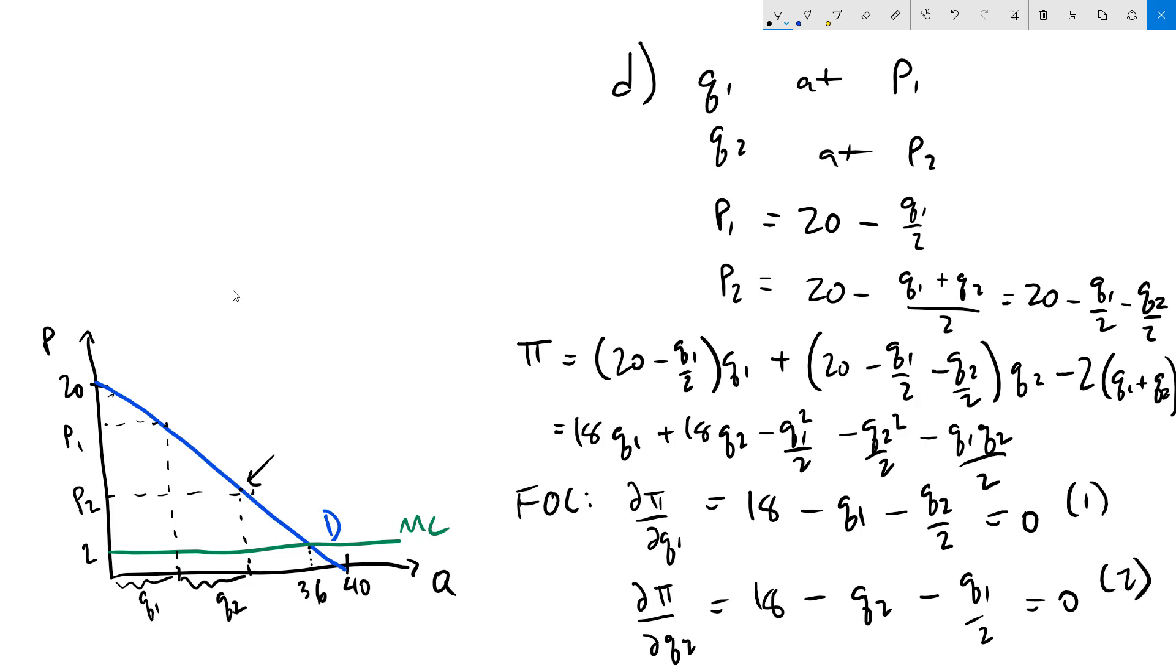I'm going to solve equation 1 for Q2. So adding Q2 over 2 to both sides and multiplying both sides by 2 we get 36 minus 2 Q1 equals Q2 and then I'm going to plug that into equation 2.